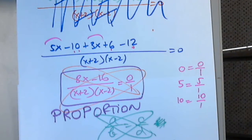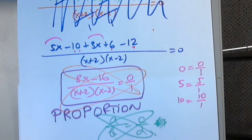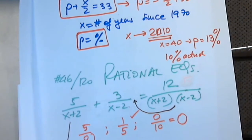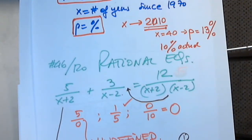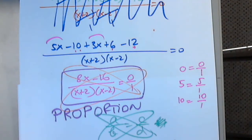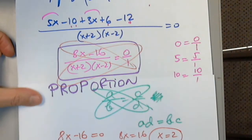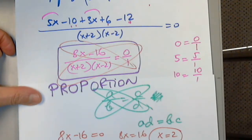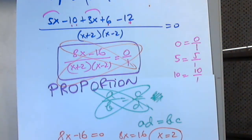Adding 16 to both sides gives 8x equals 16. Dividing both sides by 8 gives x equals 2 — but that's no good! That's why we wrote the restrictions from the beginning: x cannot equal 2. So this equation is called a contradiction — it has no solutions.